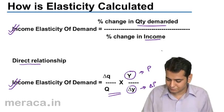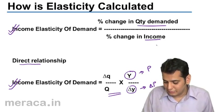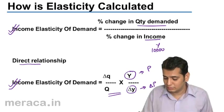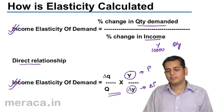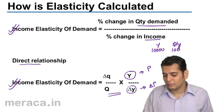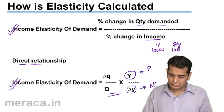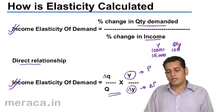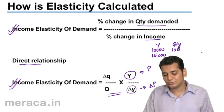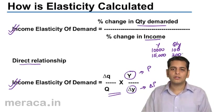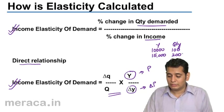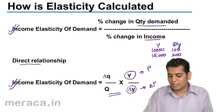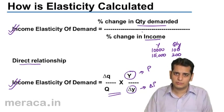Let's take an example. The income of an individual is 10,000 rupees per month, and at this income level he purchases 100 units of a commodity. The income level then rises to 15,000 rupees, and at this income level his consumption rises to 200 units. We will calculate income elasticity using both formulas.